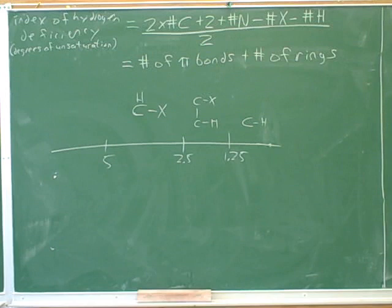Well, we would again expect these hydrogens to be in the 2.5 to 5 region because they're on a carbon that's attached to an electronegative element. And here we are, 3.3 to 4.